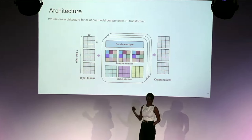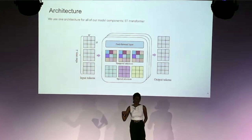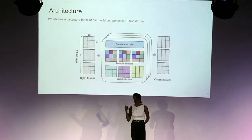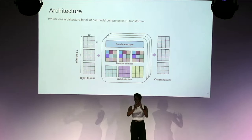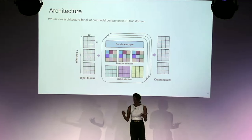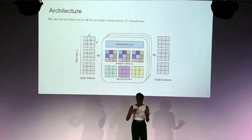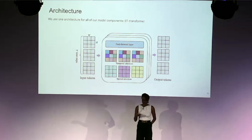Throughout all components — the tokenizer, the latent action model, and the dynamics model — we use a spatial-temporal transformer with a spatial layer for images, a temporal layer for sequences of images, and a linear layer. This structure allows us to scale the model linearly rather than quadratically over time, giving us both speed and memory efficiency.